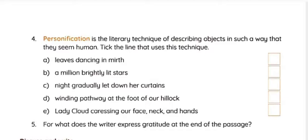For example, we can say a chair looks like a very beautiful girl or boy — we are giving life to the chair, which actually doesn't have life. So that is personification. Here, the example 'leaves dancing in mist' — can leaves really dance? No. So the writer has given personification to leaves, treating them as human.